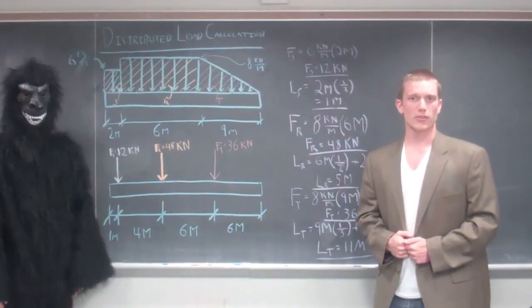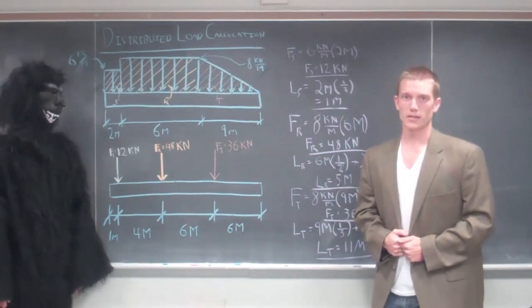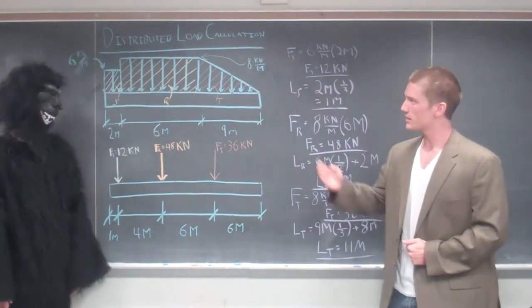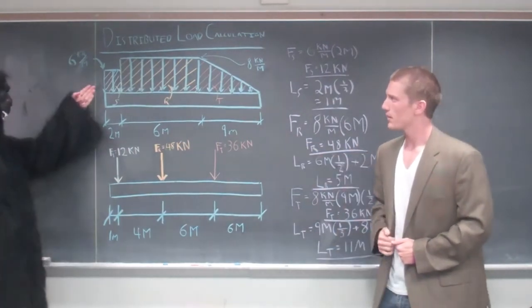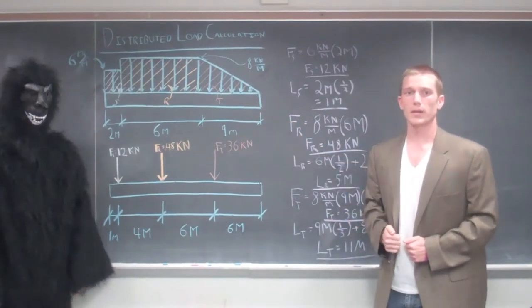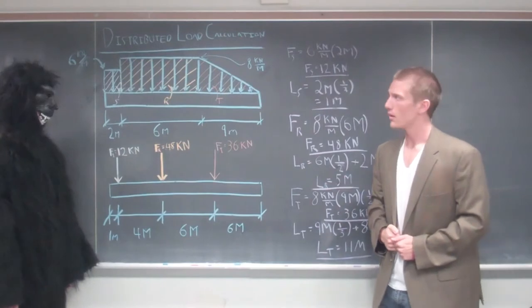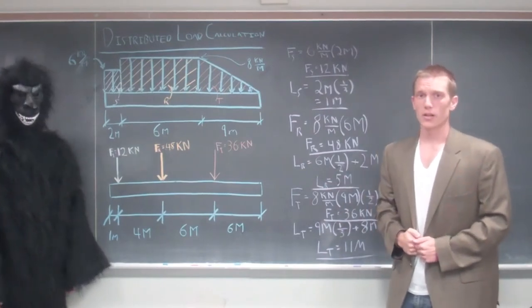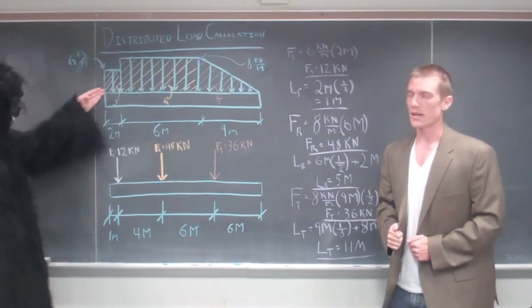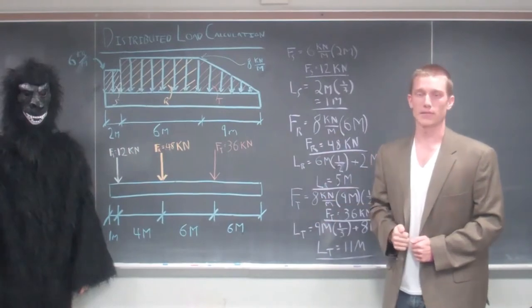Now to calculate the distributive load, you have to multiply the distributive load by the distance it covers. In the case of the first distributive load, we have six kilonewtons per meter multiplied by the two meters it covers, giving us twelve kilonewtons. Since it is a rectangle, that force goes directly down the center of that rectangle. That rectangle goes over two meters, therefore the force goes one meter from the left.